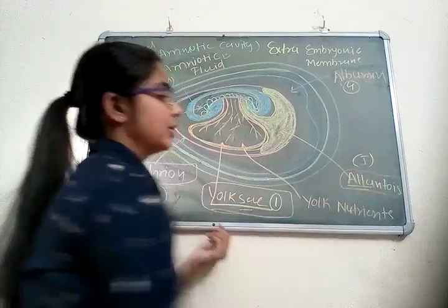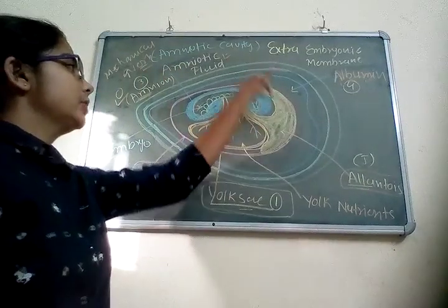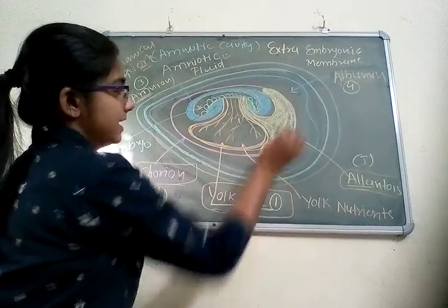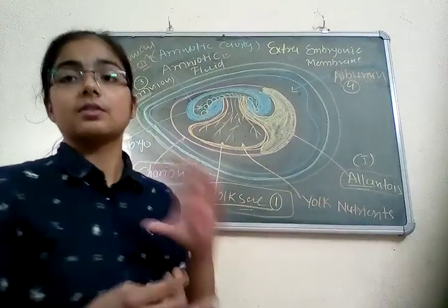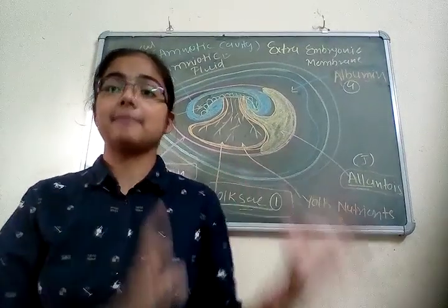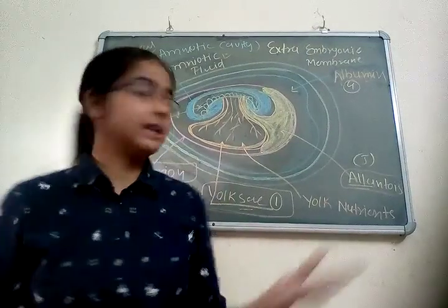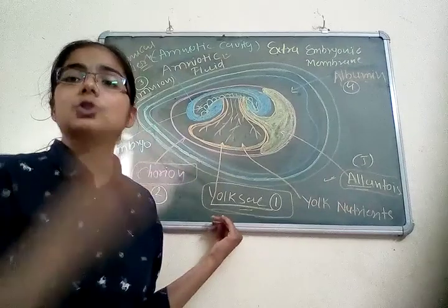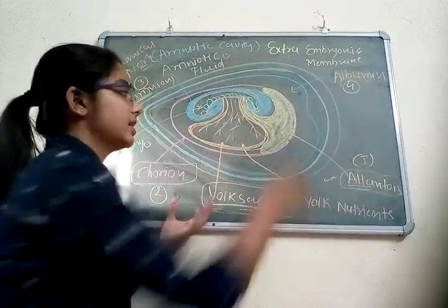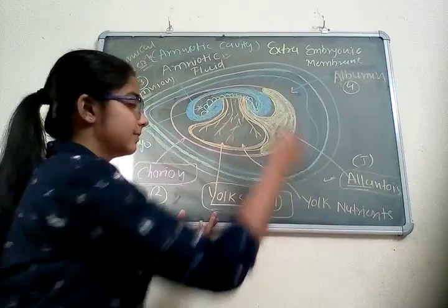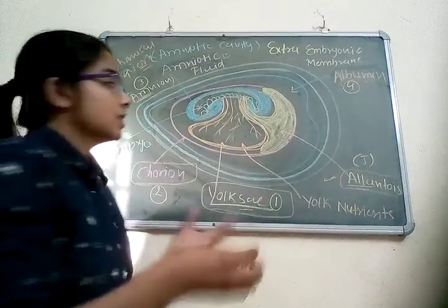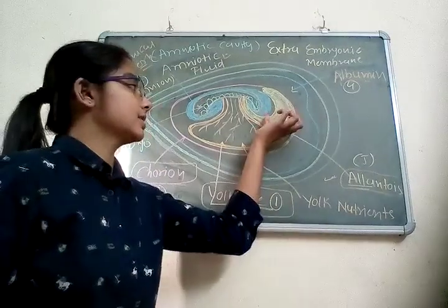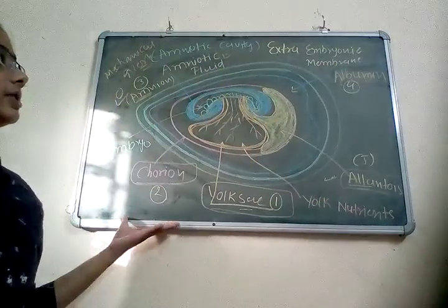The fourth and last one is the allantois, which is also attached to the embryo. The allantois functions like a bladder — just as we have a bladder in our body that stores urine, the allantois in the chick stores various types of excretory fluids secreted by the embryo, such as ammonia, urea, or uric acid.